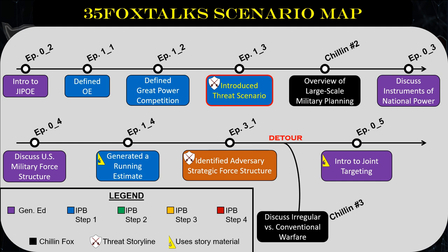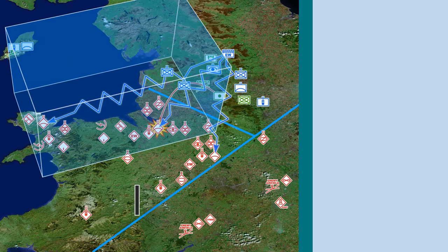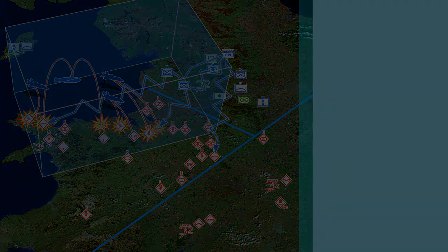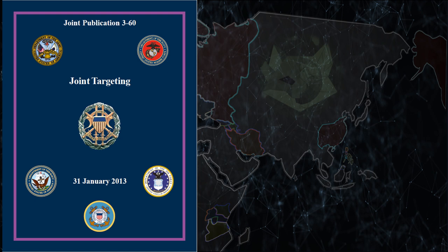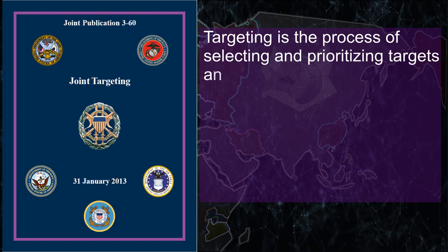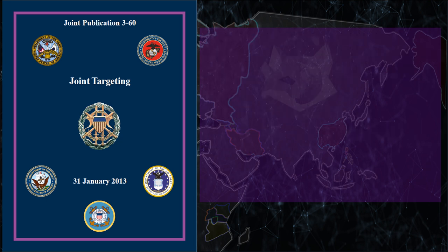All of this begs two questions. What is targeting, and at what point in JIPO do we start it? The answer to what is targeting can be found in Joint Publication 3-60. For this episode, we will use the 2013 version because the newer version requires a CAC for access, so we're going to use the publicly available version of the document. Targeting is the process of selecting and prioritizing targets and matching the appropriate response to them, considering operational requirements and capabilities.